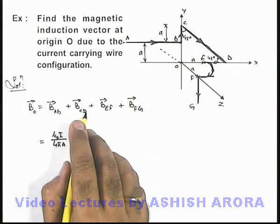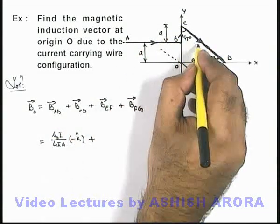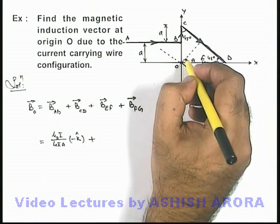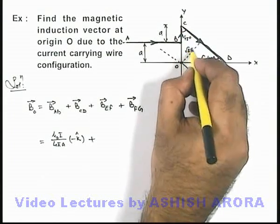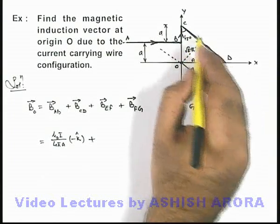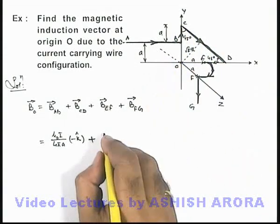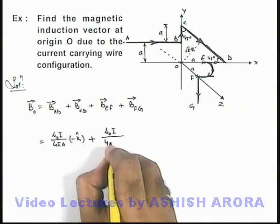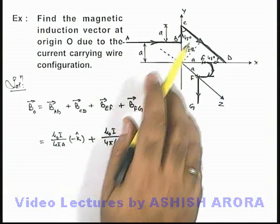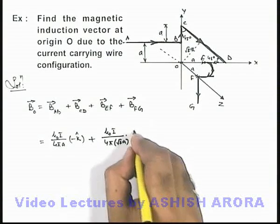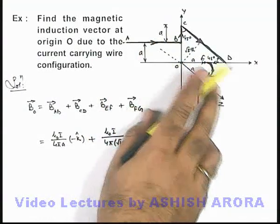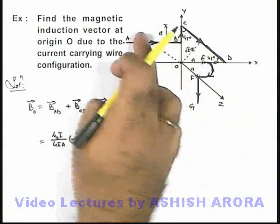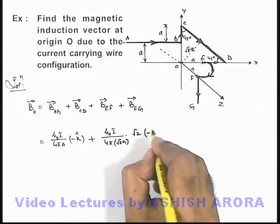For wire segment C-D, the total diagonal distance is 2a, so the perpendicular distance from the origin is 2a·cos45° = √2·a. Using the result for a finite wire, the magnetic induction is (μ₀i / 4π·√2a) multiplied by (cos45° + cos45°), which gives √2. Since the wire lies in the x-y plane and by the right-hand thumb rule the field is along minus-z, we multiply by −k̂.